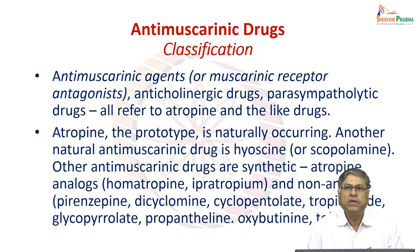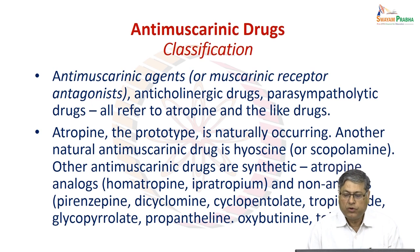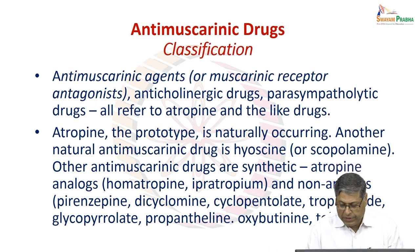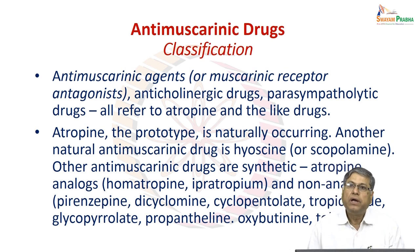Some examples of synthetic non-atropine analog anti-muscarinic drugs include pirenzepine, dicyclomine, cyclopentolate, tropicamide, glycopyrrolate, propantheline, oxybutynin, and tolterodine. We will discuss some of these — in which conditions they are used, how they produce their benefits, what their side effects and possible interactions are, and in which conditions they should not be used, that is, their contraindications.